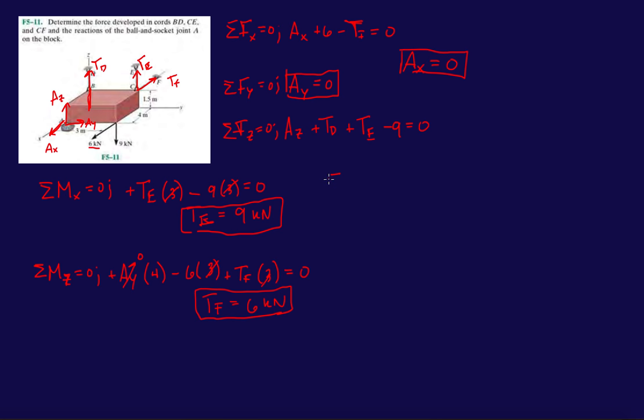I guess we do need a moment about the Y. So let's do a moment about the Y axis. TD, the line of action, intersects Y, so it doesn't count. AX intersects Y, it doesn't count. AY is parallel to Y, that doesn't count. The 6 kilonewtons force, if you keep drawing its line of action, it's going to intersect Y. Again, that doesn't count then.